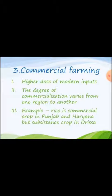Now we come to commercial farming. It requires a high dose of modern inputs like high yielding variety of seeds, tools and machines. The degree of commercialization varies from one region to another. For example, rice is a commercial crop in Punjab and Haryana, but a subsistence crop in Orissa. This is an image of commercial farming.